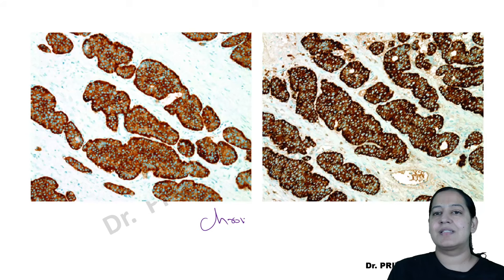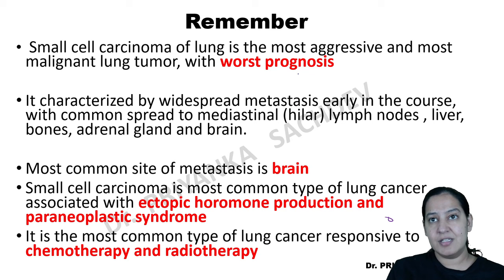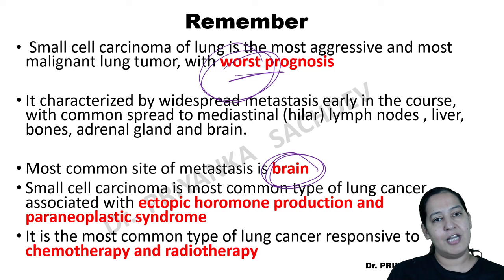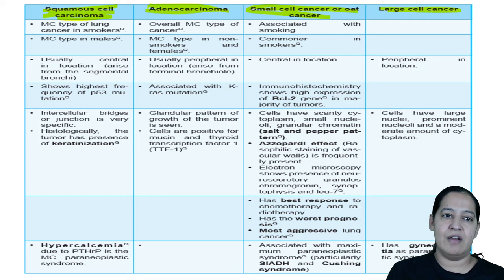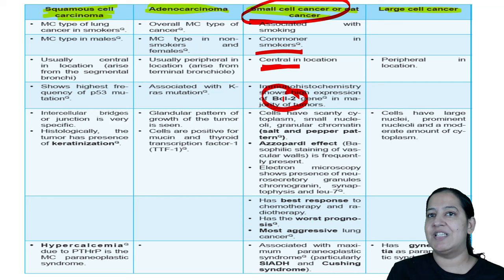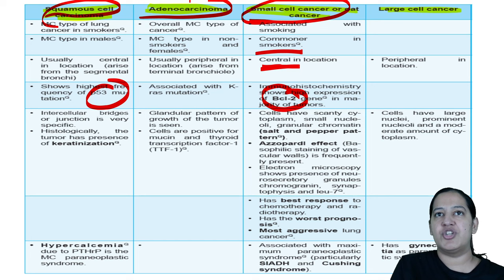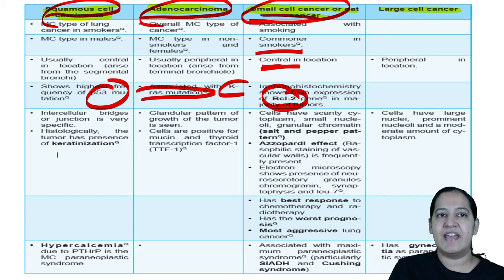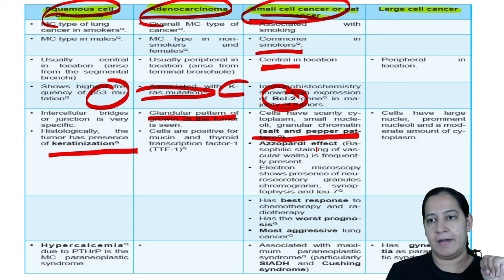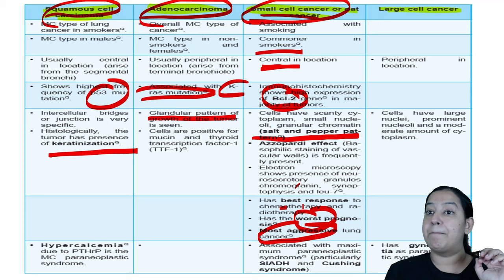Small cell carcinoma has the worst prognosis among all lung tumors. It metastasizes very quickly, most commonly to the brain followed by the adrenal gland. It also shows paraneoplastic syndrome. However, it responds to chemotherapy and radiotherapy dramatically. The most common mutation in small cell carcinoma is BCL2.